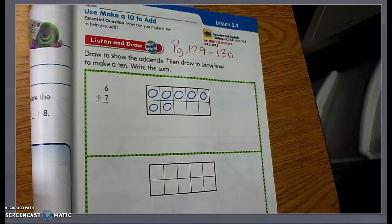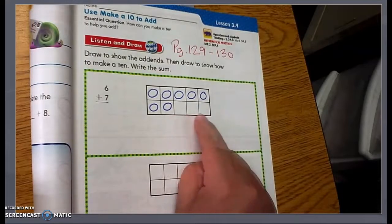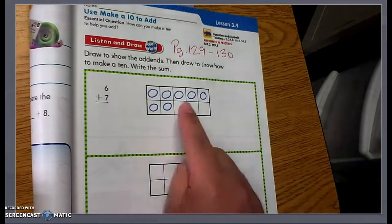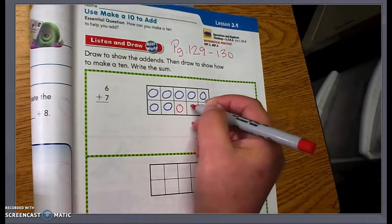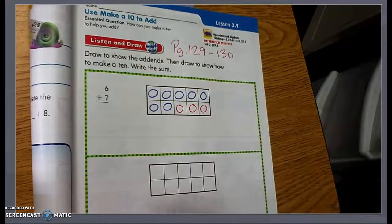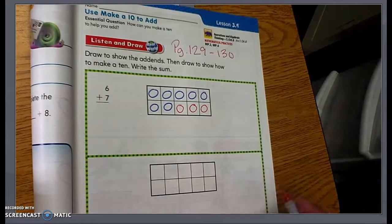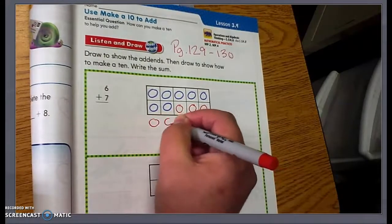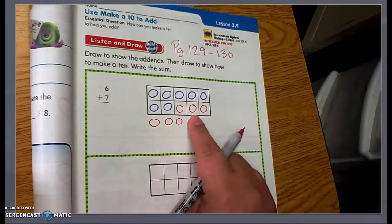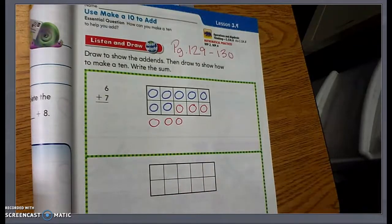So now I need to draw six red counters, but I have three empty spaces in the 10 frame. So I'm going to put three of my red counters in the 10 frame. So I have one, two, three in the frame, and one, two, three more outside. That would make six total red counters.